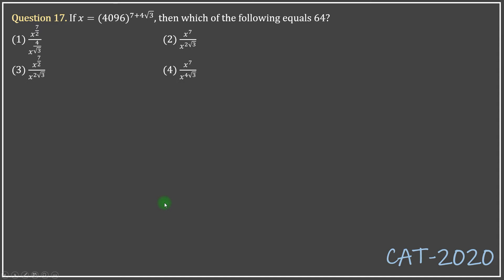The first thing that should strike is that 64 square is 4096. So what I will do is first write x equals 64 square raised to the power 7 plus 4 root 3, because I want to find the value of 64.